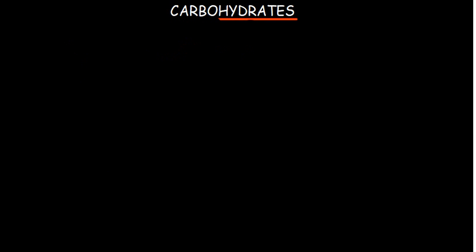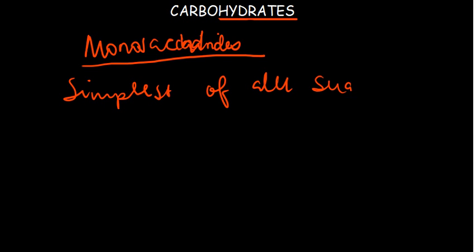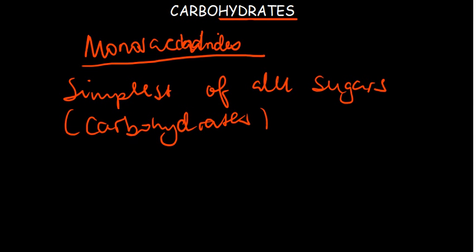Monosaccharides are the simplest of all sugars — the simplest of all carbohydrates. Looking at their characteristics: first, they are sweet; second, they are crystalline in nature; and third, they are soluble in water.